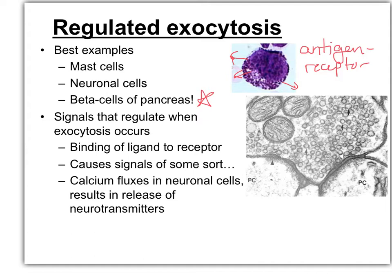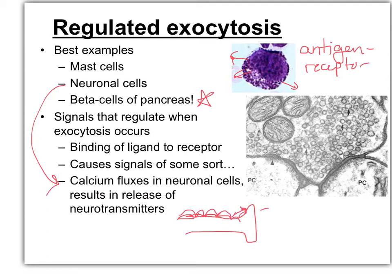The process used in neuronal cells involves calcium fluxes — specifically the internalization of calcium at the nerve terminus. The signal goes down the axon, which is made up of myelin sheaths, traveling from one node of Ranvier to the next. When it reaches the nerve terminus, it causes an influx of calcium into the cell, and that calcium regulates the fusion of vesicles at the plasma membrane, releasing neurotransmitters into the synaptic cleft.